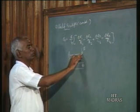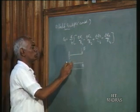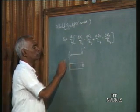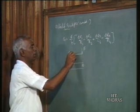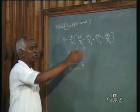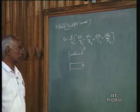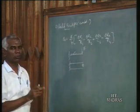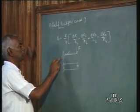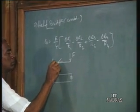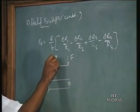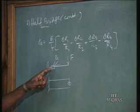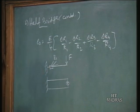To get the signal proportional to force, there are two possibilities. You can use only one strain gauge — fix only one strain gauge and connect this terminal as R1 in the circuit diagram of the bridge network — that is a quarter bridge. For a half bridge you should have two active arms. One more strain gauge can also be put at the bottom. We call this R1, and what the other should be is decided by the type of change of resistance — that is what I want to demonstrate now.